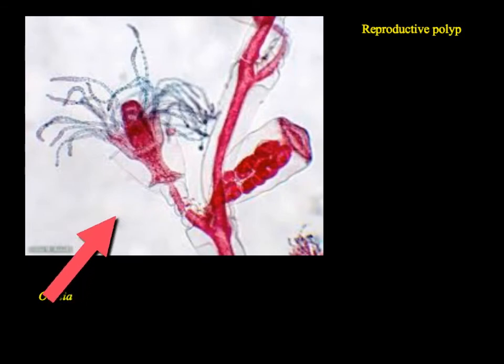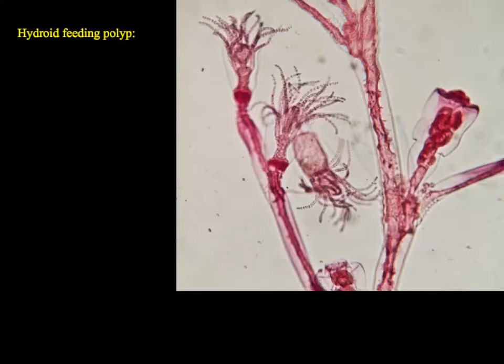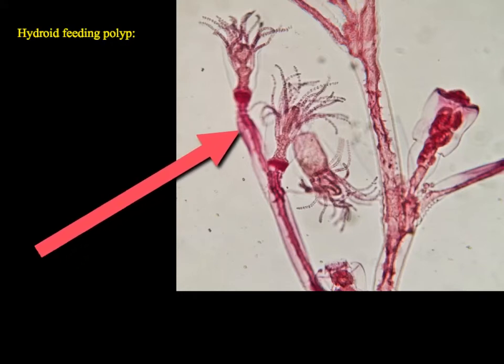We have the feeding polyp and the reproductive polyp as a closer view. The feeding polyps are connected by an internal canal, which brings food materials to the rest of the organisms so that the food captured by one polyp can feed the whole colony.